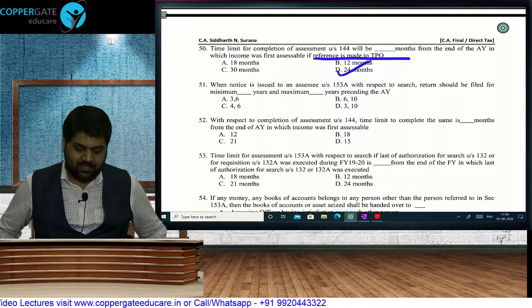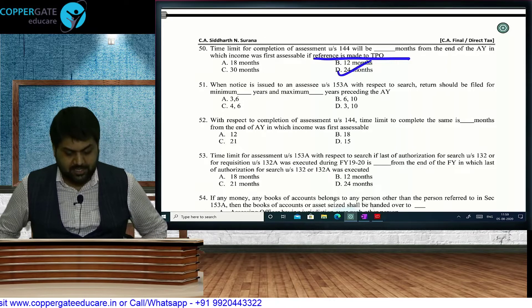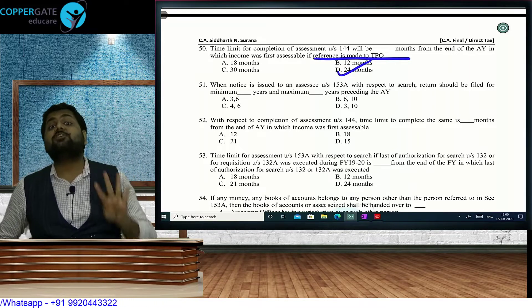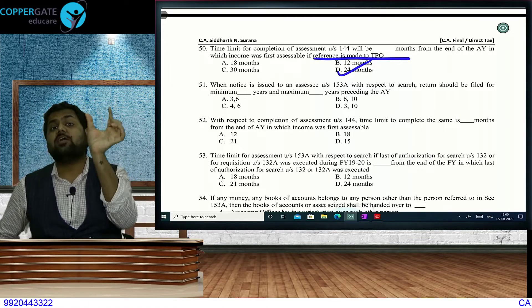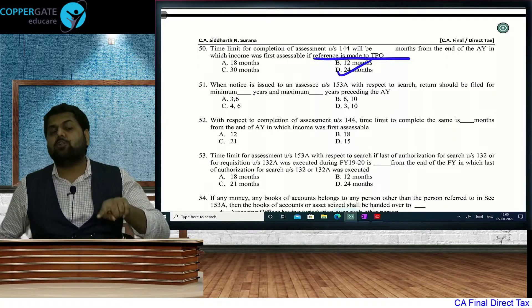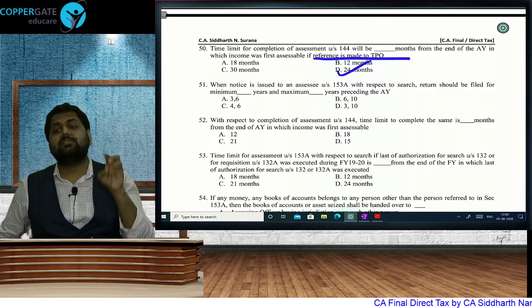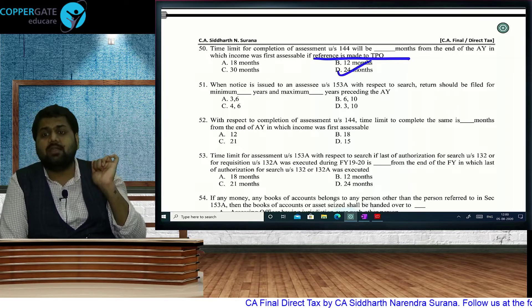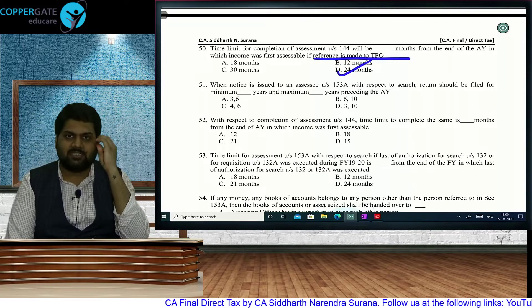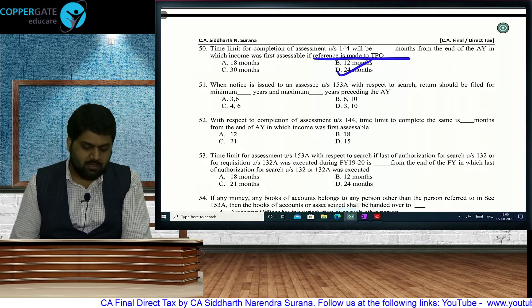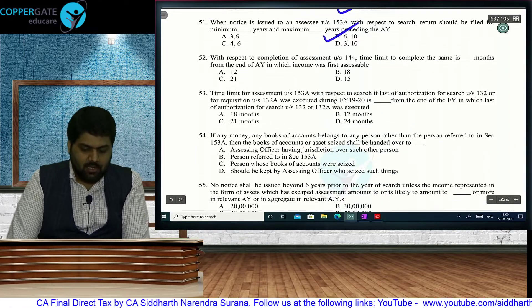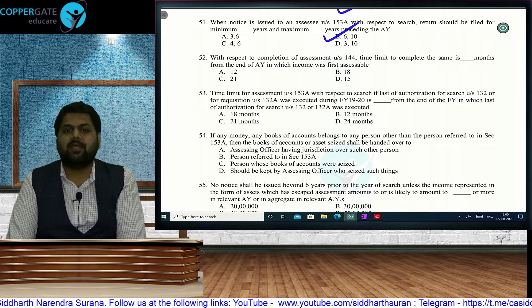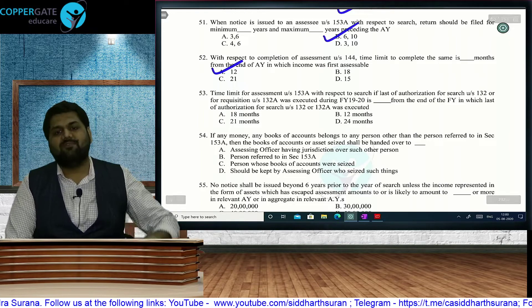Under Section 153A, when notice is issued in respect of a search, return should be filed for minimum 6 years and maximum 10 years preceding the year of search. The extra 4 years (years 7 to 10) apply if the total concealment in those years is Rs. 50 lakh or more in the form of only specified assets: immovable property, shares and securities, loans, or bank deposits — jewelry is not included. So minimum 6, maximum 10 years.